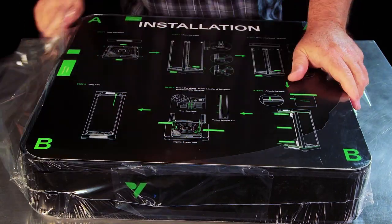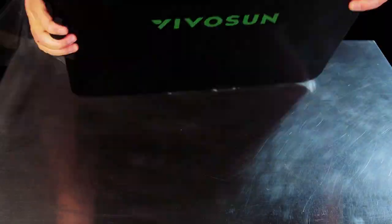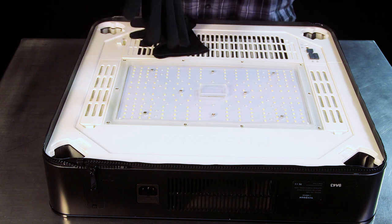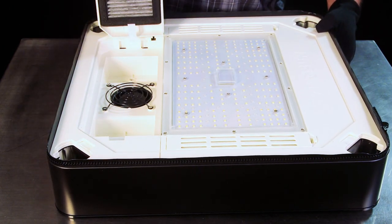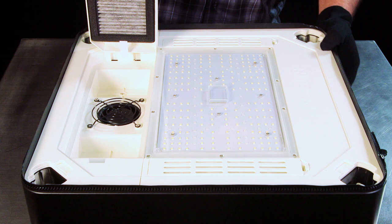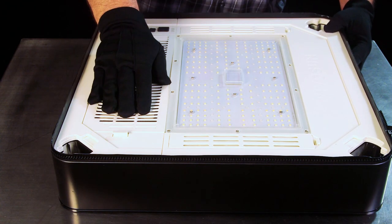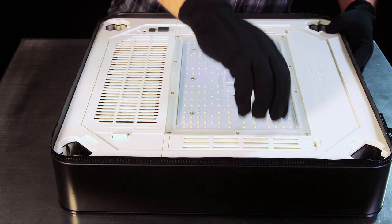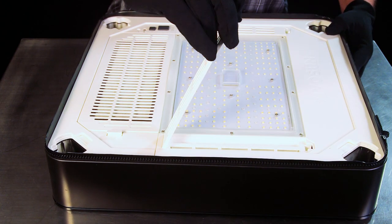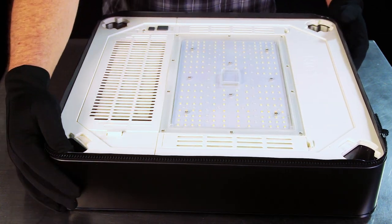We have the top unit which includes ventilation fans with a charcoal filter built in, full spectrum light that's built into the top, and circulation vents that you can see here to allow air to circulate through the box. Really cool all-in-one unit with most of the electronic components built into the top.